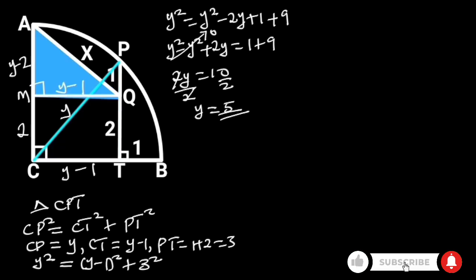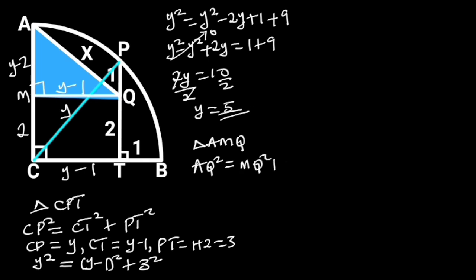Next let's focus on triangle AMQ. Triangle AMQ is a right triangle. From Pythagoras theorem, AQ squared is equal to MQ squared plus AM squared.